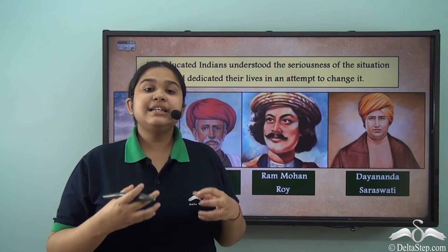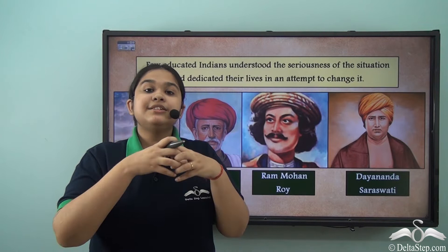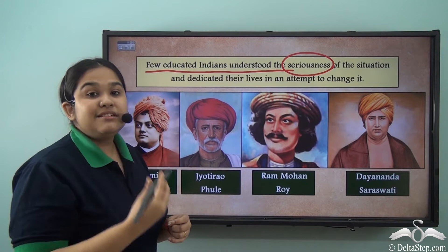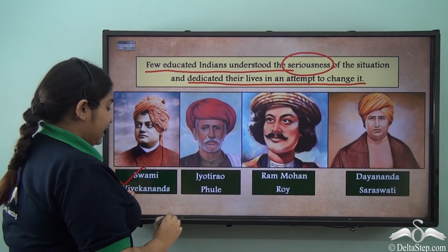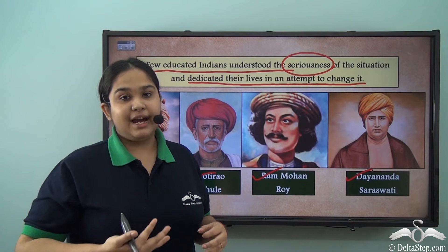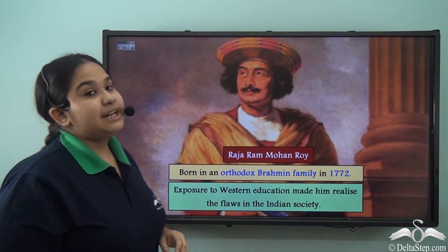As people started to gain education, certain individuals gained importance and came to the forefront to break the situation that existed in 19th century India. A few educated Indians understood the seriousness of the problems and dedicated their lives in an attempt to change it. We see people like Swami Vivekananda, Jyotirao Phule, Ram Mohan Roy, and Dayanand Saraswati, among many other reformers, who tried to reform the structure of Indian society.